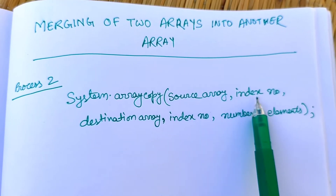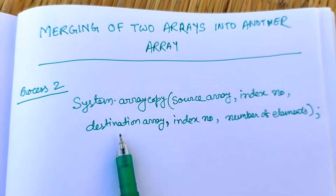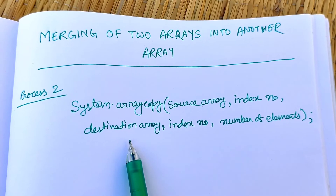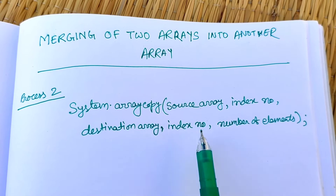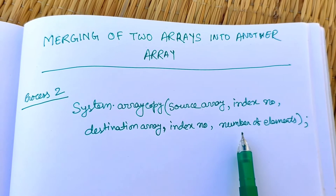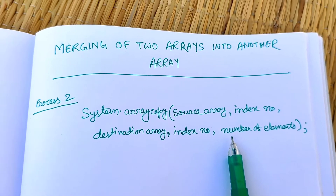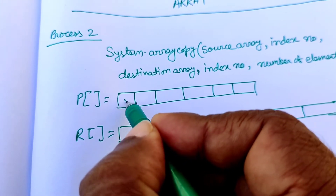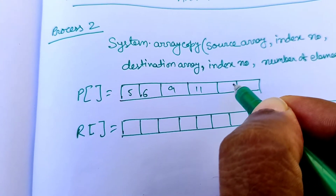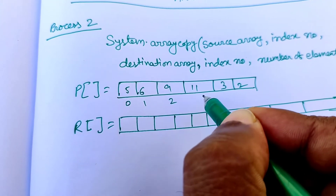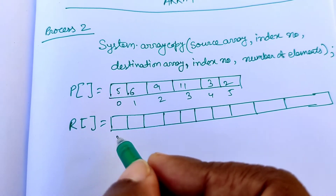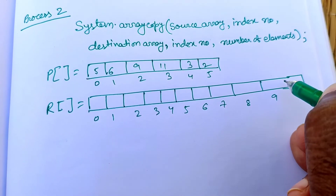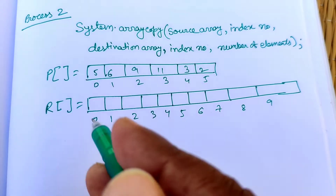The remaining parameters are the destination index position and the number of elements to copy. For example, array p has elements 5, 6, 9, 11, 3, and 2 at index positions 0 through 5, and destination array r has positions 0 through 9 to hold all 10 elements.